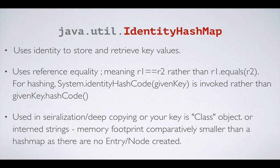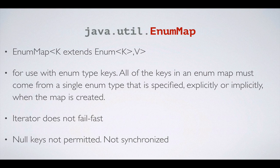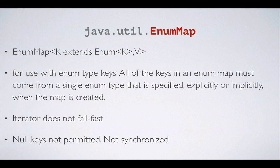The next map implementation we should know about is java.util.EnumMap. The class definition says EnumMap<K extends Enum<K>, V>. This is a map that takes an enum as key, and the enum type must come from a single enum type specified explicitly or implicitly when the map is created. Null keys are not permitted in EnumMap — and for that matter, null keys are not permitted in HashTable either, which throws a NullPointerException. EnumMap is not synchronized, neither are TreeMap or LinkedHashMap.